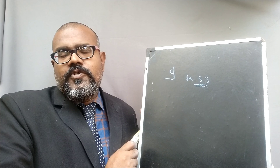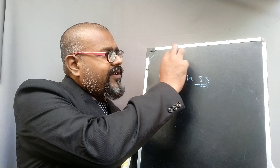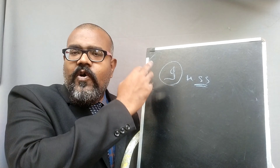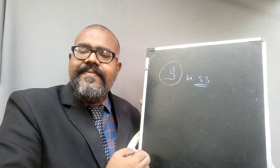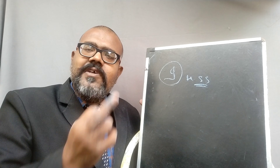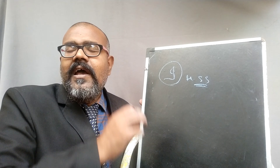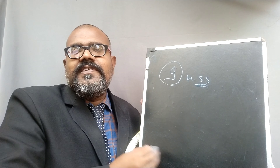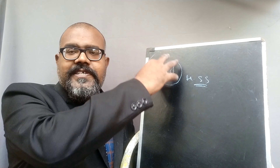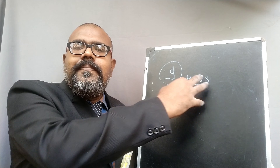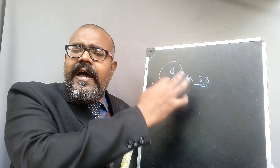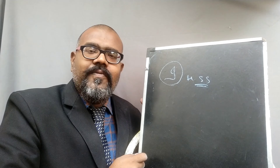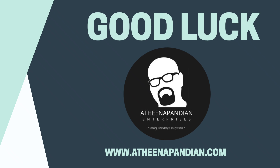So, today we covered the fresh unit on the skeletal system: how many bones are there, what the classification is, how many bones fall under each classification, and what the main functions are. In the next class, we will look at the structure of the skeletal system, draw the skeletal diagram, and discuss the parts and functions of each part. Thank you very much.